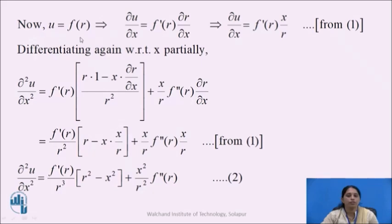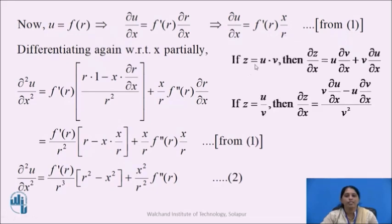Since u = f(r), ∂u/∂x = f'(r)·(∂r/∂x) = f'(r)·(x/r), using equation 1. Now to get ∂²u/∂x², we differentiate ∂u/∂x partially with respect to x. Since we have f'(r)·(x/r), we use the product rule: if z = u·v then ∂z/∂x = u·(∂v/∂x) + v·(∂u/∂x). So ∂²u/∂x² = f'(r)·(derivative of x/r) + (x/r)·f''(r)·(∂r/∂x).